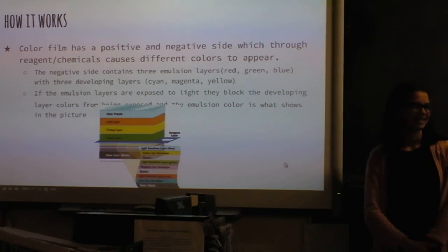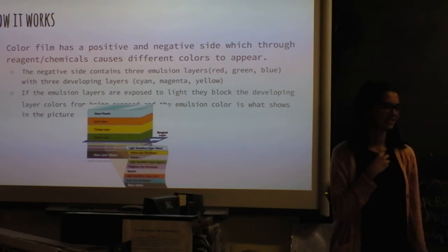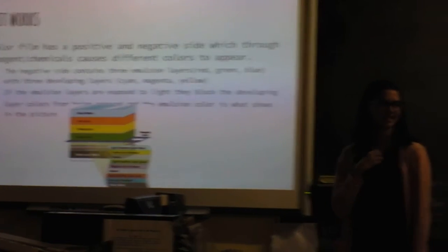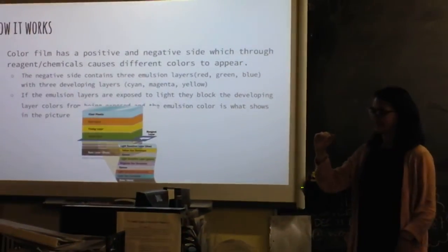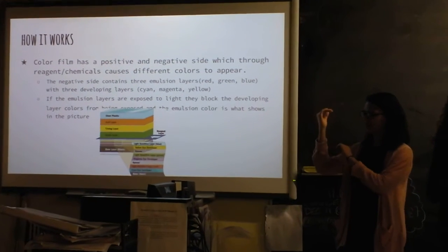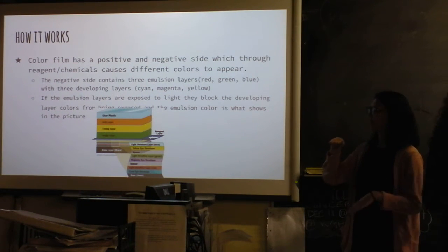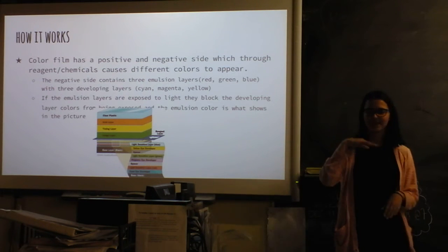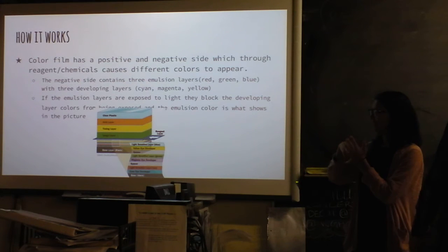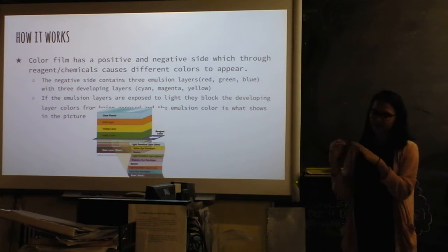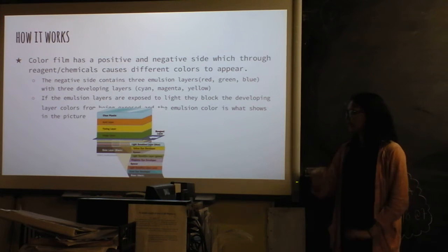So, yeah, we use color film for part of our experiment and then like black and white film. Okay. So, in the color film, it has different layers of dye and stuff. And so, in the negative side, it has three primary colored layers that are emulsion layers. It has developing layers underneath. And so, if the light hits the emulsion layers, then that color stays. And the developing layers don't emerge. But if it doesn't hit it, then the developing colors come through to make different colors.